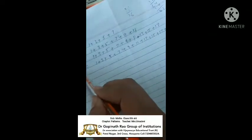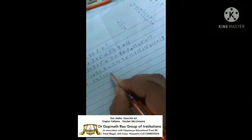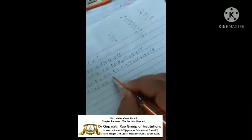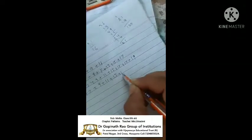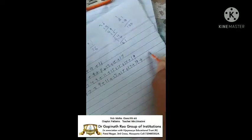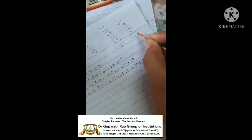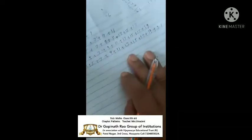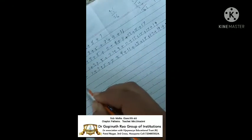Next, taking 121: 1 plus 3 plus 5 plus 7 plus 9 plus 11 plus 13 plus 15 plus 17 plus 19 plus 21. Comes as 121. Next: 144.